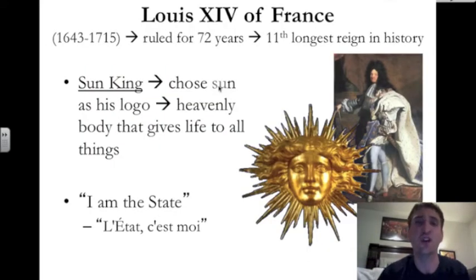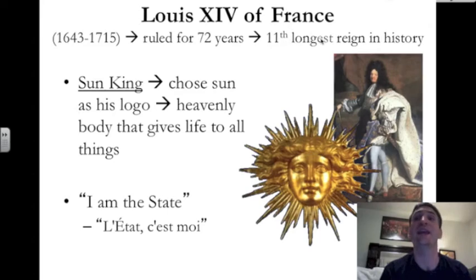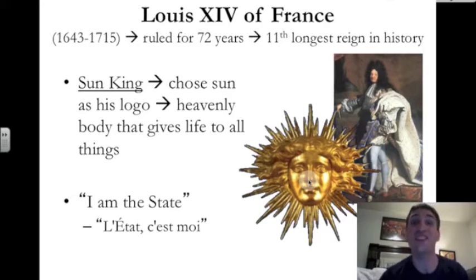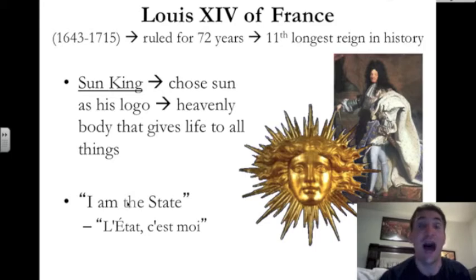Let's first study and explore Louis XIV of France. He ruled France from 1643 until 1715, making him a ruler for 72 years — in fact, he is the 11th longest reign in history. Louis XIV gave himself the nickname Sun King and he chose the sun as his logo, decorated on his palace. Why the Sun King? Well, the sun was a heavenly body that gives life to all things, and Louis XIV had a huge ego — he thought the world revolved around him, just like the sun. He also said, 'I am the state. I am the government. One person is enough.' This is one of his famous phrases.